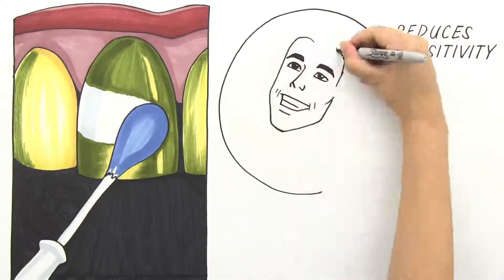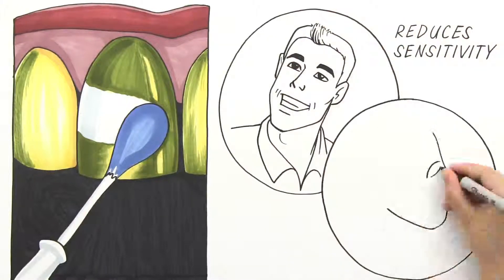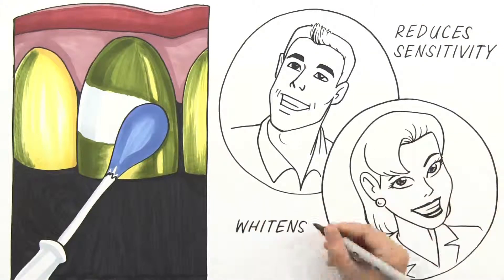Unlike normal bleach whiteners, Power Swabs work on natural teeth, veneers, bonding caps, and crowns.